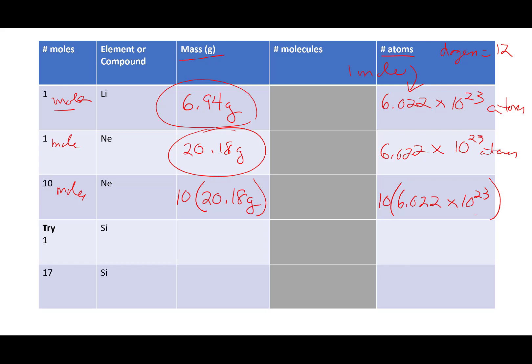Let's check and make sure you're understanding. Hit pause, fill in the next two, and then we're going to come back and do them together. If you look up silicon on the periodic table, one mole of silicon is going to have a mass equal to silicon's atomic mass, 28.09 grams. How many atoms of silicon will there be? Well, one mole of anything, 6.022 times 10 to the 23rd. If I have 17 moles of silicon, what's the mass going to be? 17 times 28.09 grams. And how many atoms is this going to be? 17 times 6.022 times 10 to the 23rd. You starting to catch on?